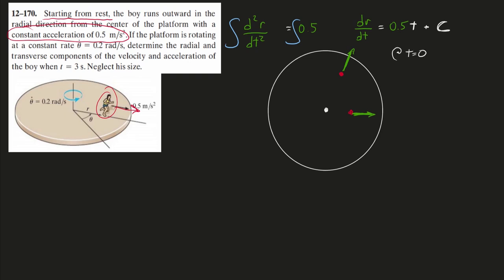At t equals zero, at the very first instant, what is the velocity that this guy is running with? They say starting from rest. So at time equals zero, his speed is zero. This constant here will be zero because that's necessary for t to equal zero and speed to equal zero.